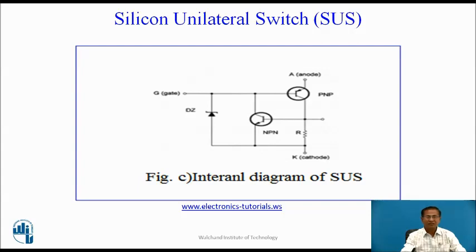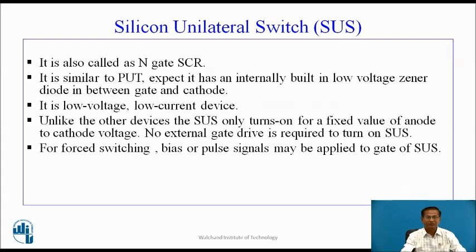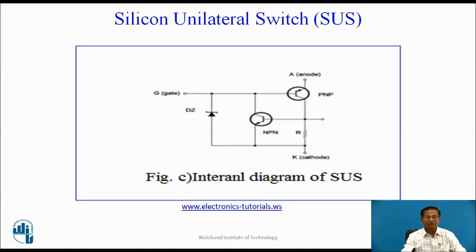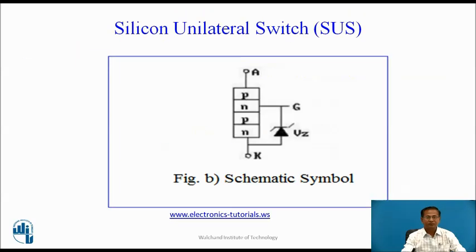Figure C is the internal diagram of SUS. It is also called as an N gate SCR. In the SCR, the gate is connected to the P region, but in SUS, the gate is connected to the N region adjacent to the anode, that's why SUS is called as an N gate SCR.